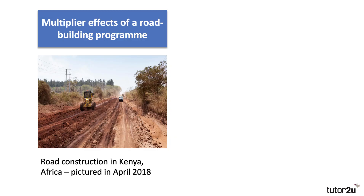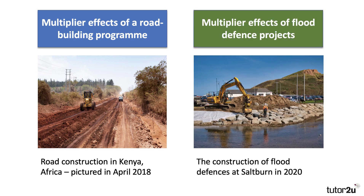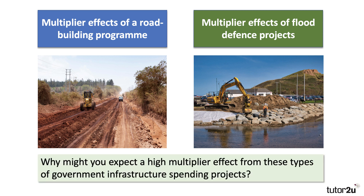Here's an example in the development context: a road-building project in Kenya, pictured about three and a half years ago. These kinds of projects can bring about positive multiplier effects. Similarly, in a wider context, government environmental policies — such as the construction of flood defenses at Saltburn, a lovely part of the northeast coast — are designed not only to provide flood defense but also to create jobs and output in the local area.